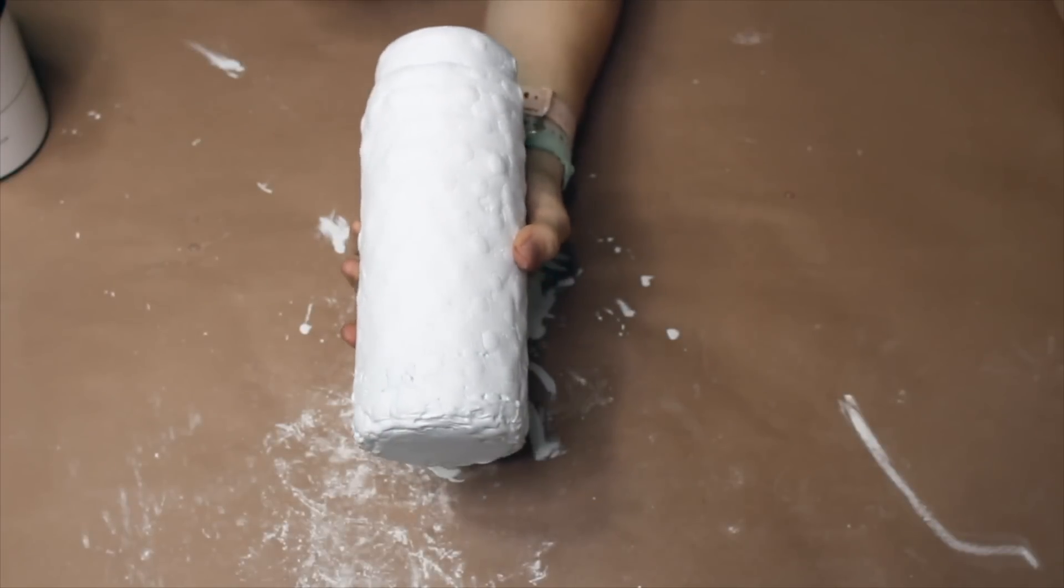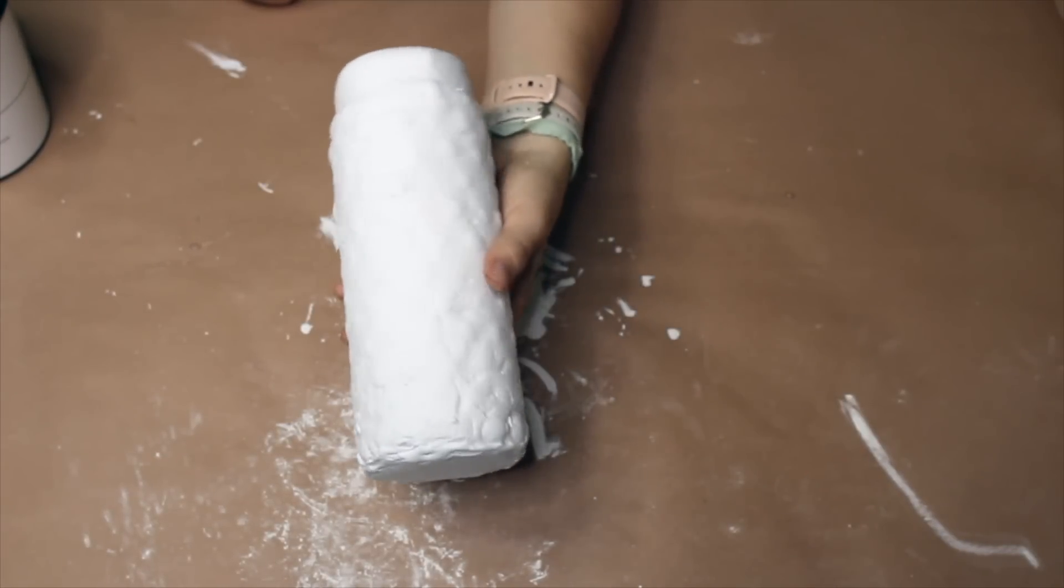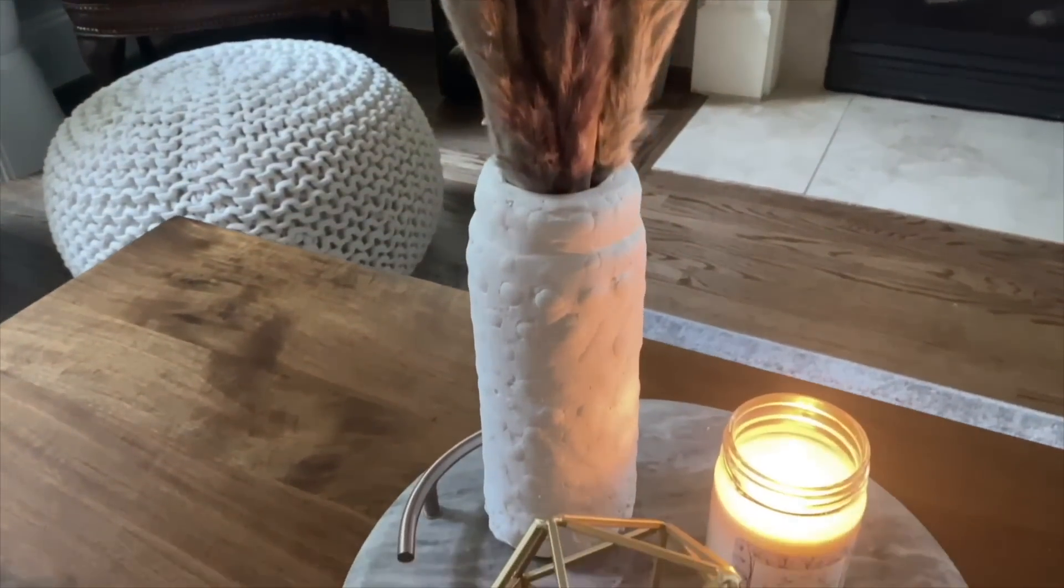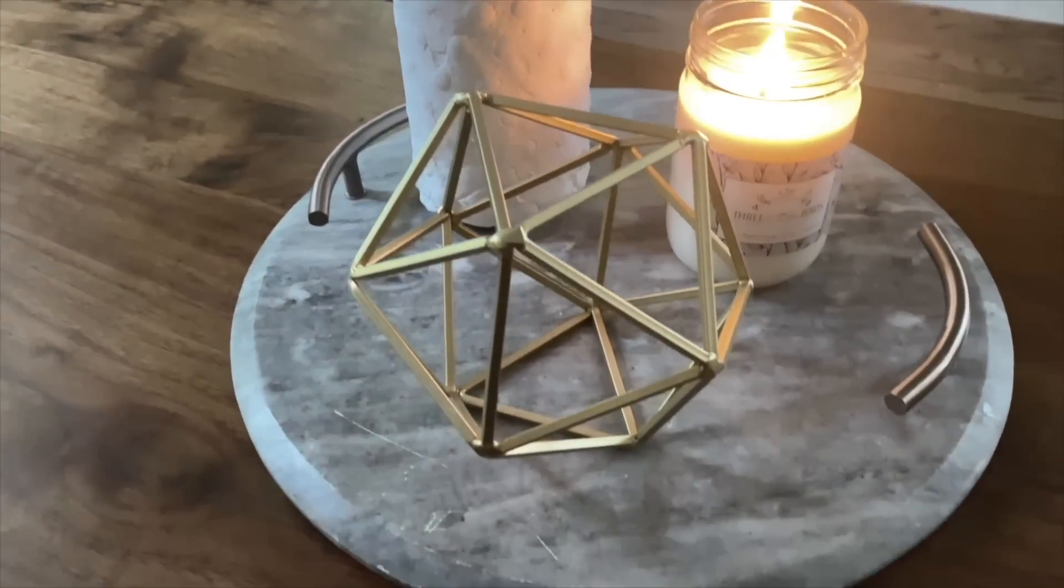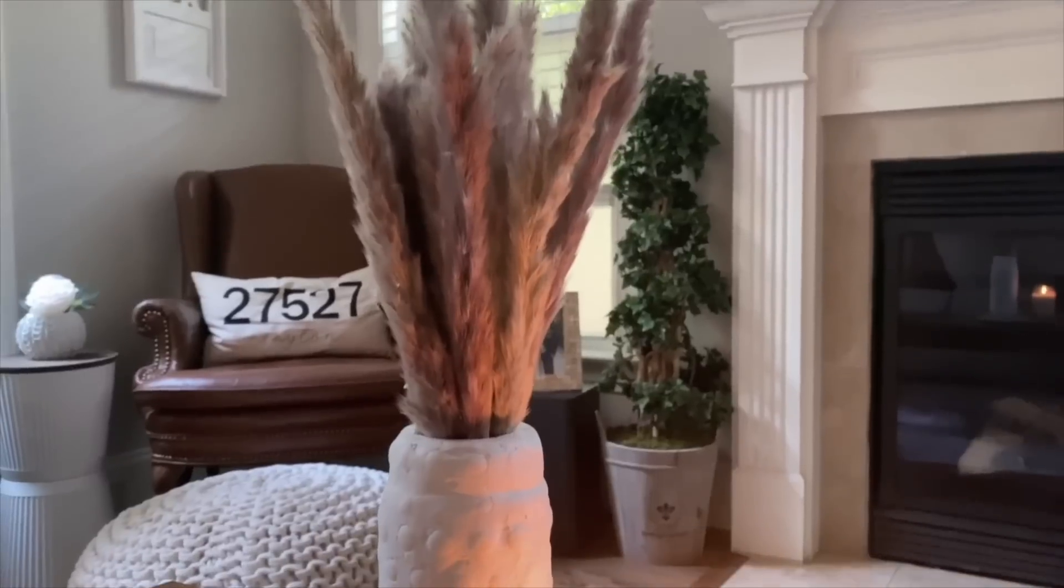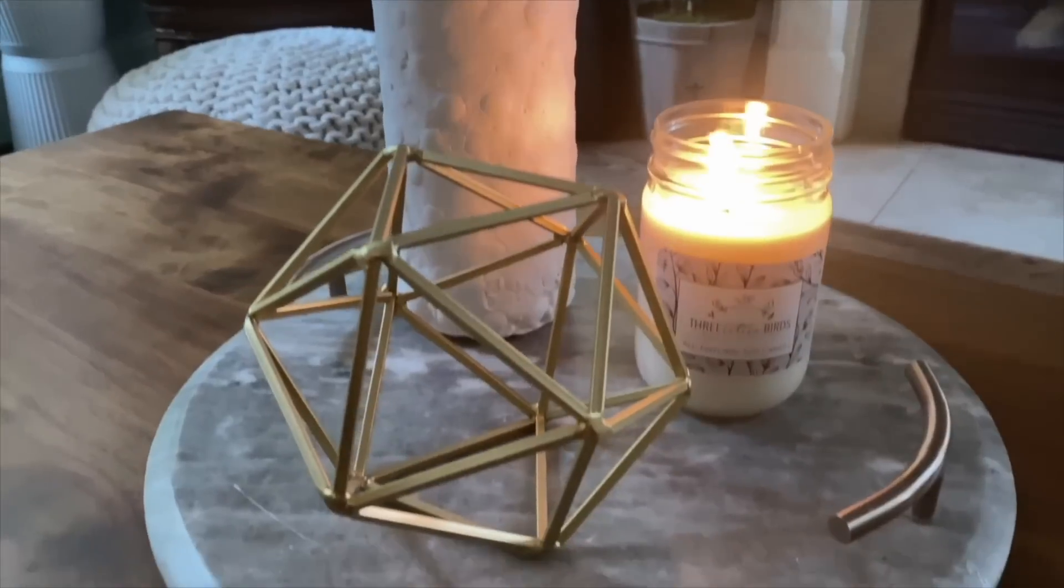Alright, so now that my vase has been painted, it's got that fun modern textured vibe to it. And there you have it—this Dollar Tree water bottle has turned into a really cool modern contemporary vase. I hope that you enjoyed this project and you feel inspired to try this one in your home. Thank you so much for watching Home Talk, and I will see you in the next one.